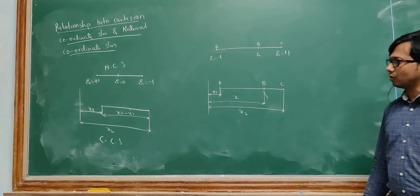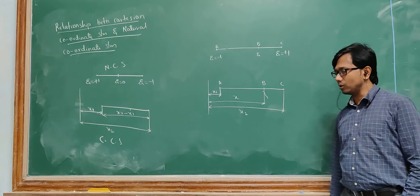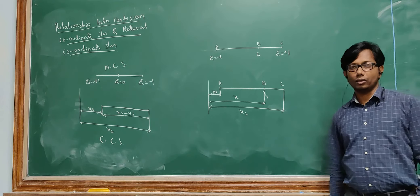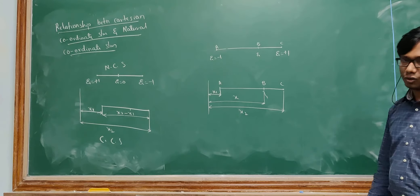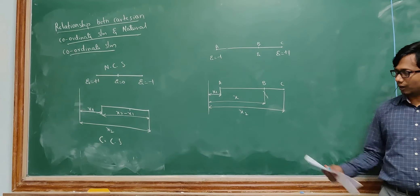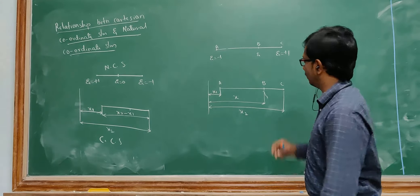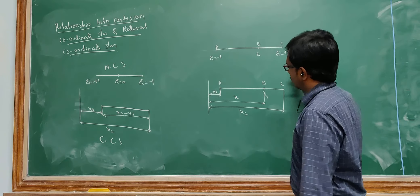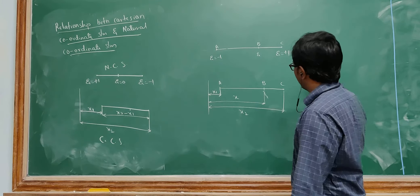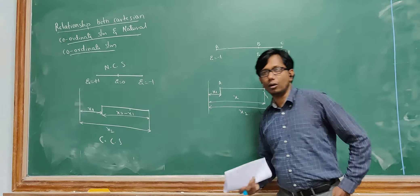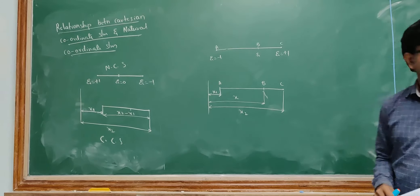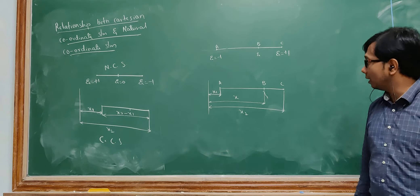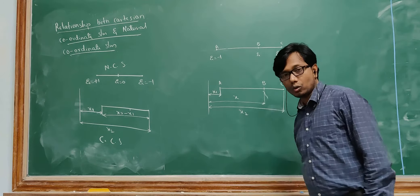Apart from all these three, natural coordinate system is the most important coordinate system because whenever I want to derive the stiffness matrix or the load vectors, instead of going with the Cartesian coordinate system, I can easily go with the natural coordinate system. The need of this natural coordinate system is its range is only unity — it starts from minus 1 on the left side and ends with plus 1. So if I am doing any integration with respect to this natural coordinate system, I will be getting a very easy way to solve this particular problem.